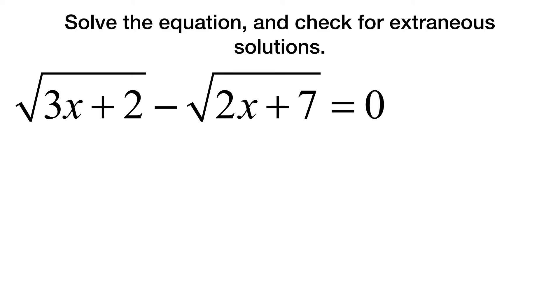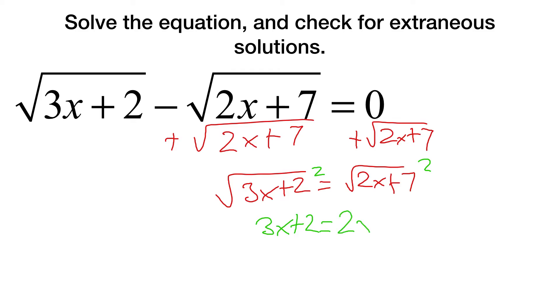Now with this equation, what I like to do personally is I like to get each square root on opposite sides of the equation. So the way I'm going to do that is by adding this second square root to both sides. Meaning, we get the square root of 3x plus 2 equals the square root of 2x plus 7. Now both sides will just square, which gets us 3x plus 2 equals 2x plus 7.